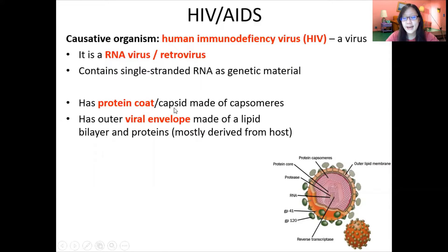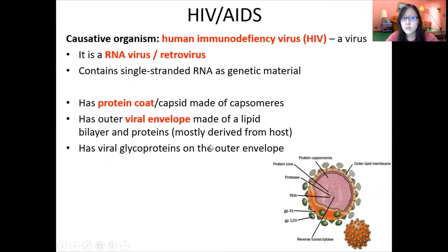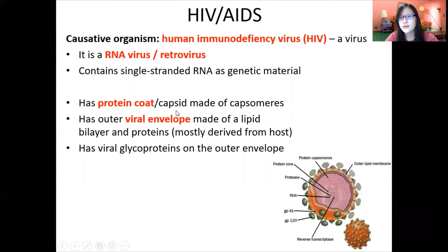The protein coat or capsid is made up of capsomeres — these are specific proteins. The viral envelope is made up of a lipid bilayer and proteins derived from the host, and it has many viral glycoproteins on the outer envelope. These are called GP41 and GP120 — GP just means glycoproteins.